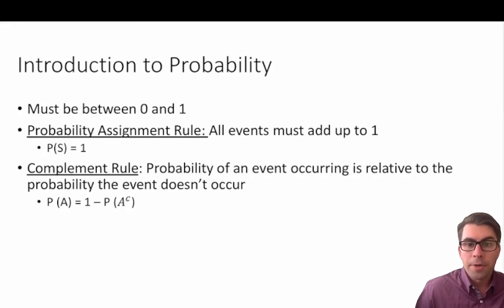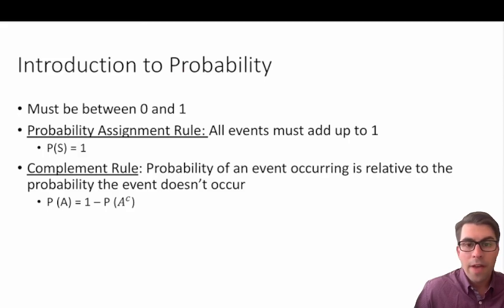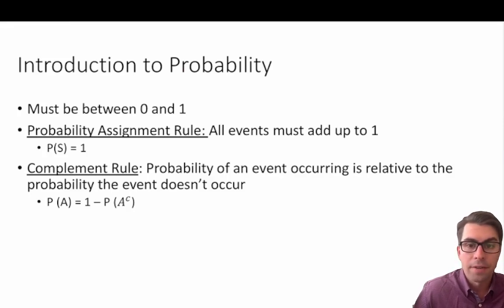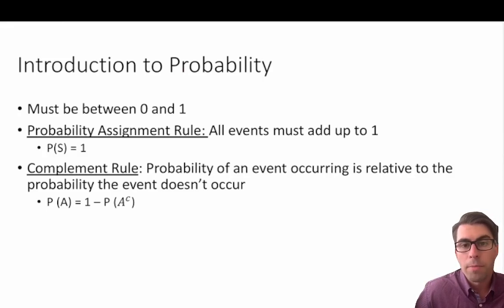In statistics probability refers to a numerical value between 0 and 1. It can take on an infinite number of values between 0 and 1, but it must be bounded between those values. So a probability of negative 0.25 doesn't make any sense, and a probability of 1.25 also doesn't make any sense.